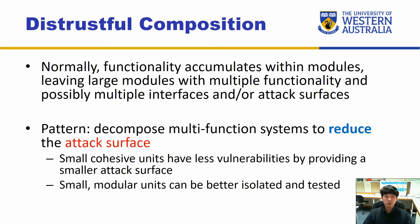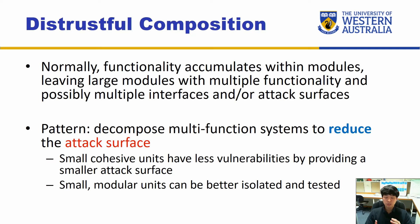Next is distrustful composition. Normally, functionality accumulates within modules, leaving large modules with multiple functionalities, possibly multiple interfaces, and larger attack surfaces. If a component that does many things gets compromised, the attacker can utilize all those functionalities. So you want to separate them out — by doing so, you reduce the attack surface, which means reducing how attackers may gain access to that resource. By providing small, cohesive units, you have fewer vulnerabilities and less attack surface.